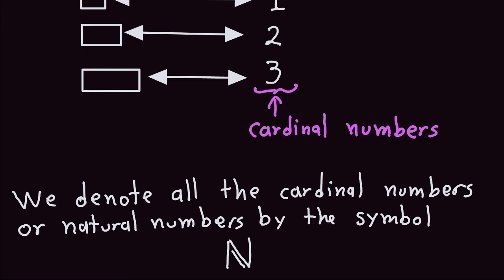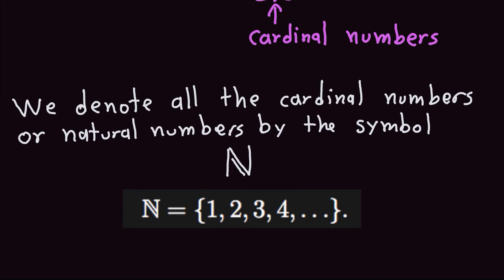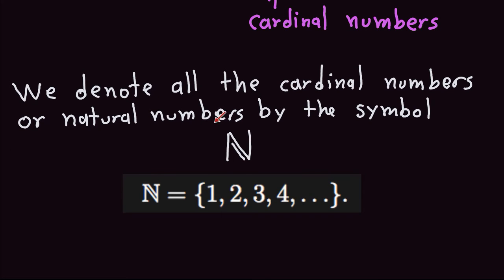We're going to denote all the cardinal numbers — one, two, three, four, and so forth — with this symbol: an N with a double bar, like ℕ. What we mean by natural numbers or cardinal numbers will be this collection: one, two, three, four, and so on. This is an infinite set, so it goes on forever. I will probably use the term 'natural numbers' more than 'cardinal numbers.'